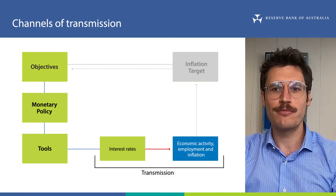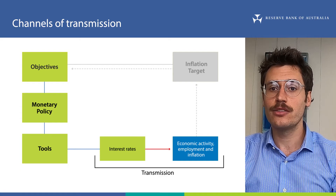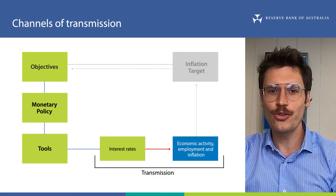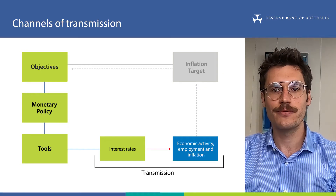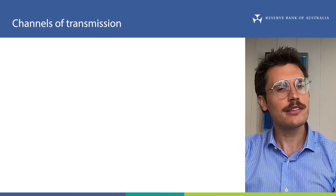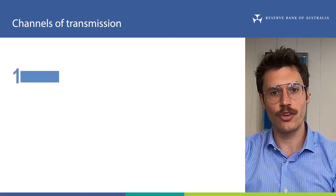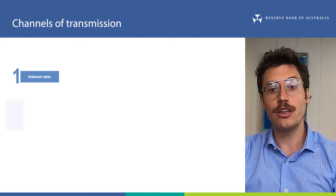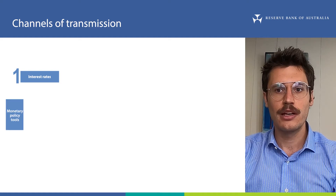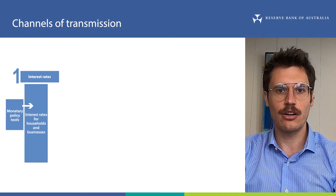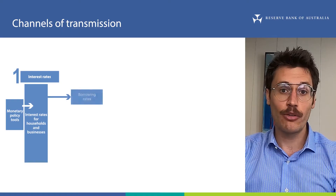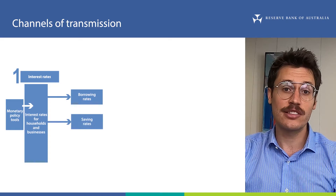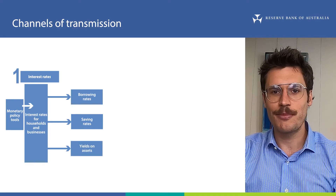Let's check in with our roadmap. Over the past few videos we've talked about monetary policy tools and interest rates. If you haven't already, I suggest you watch these videos. This means we've actually already talked about the first step of monetary policy transmission — how the RBA uses monetary policy tools to influence different interest rates in the economy. This includes borrowing rates for households and businesses, interest rates on savings accounts and yields on many assets.